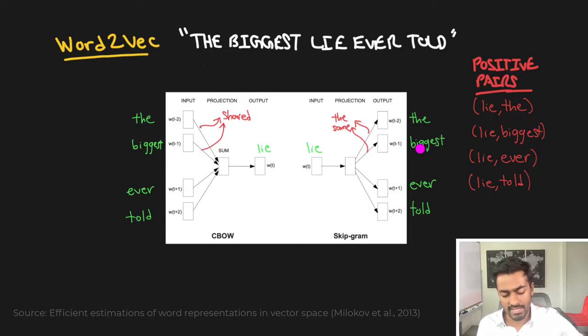Skip-gram is very similar in the sense that we have the word 'lie' and we are now predicting outer context words. Now I mentioned that the vector that we are multiplying this with is the exact same.